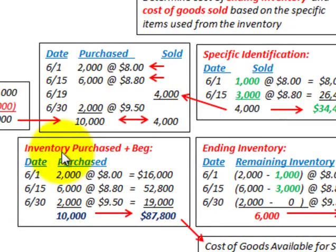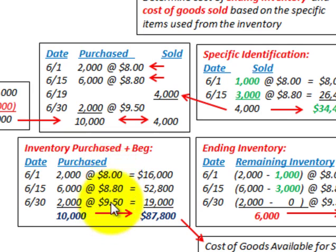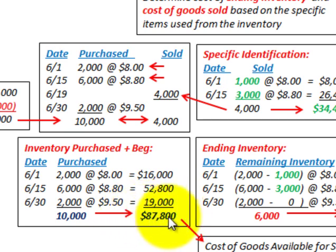Now let's do our calculations. To determine total inventory value, we normally add purchases plus beginning inventory, but since beginning inventory is zero here, we just take the quantity purchased times the unit price for each date. That gives us $16,000 on June 1st, $52,800 on June 15th, and $19,000 on June 30th, for a total inventory value of $87,800.